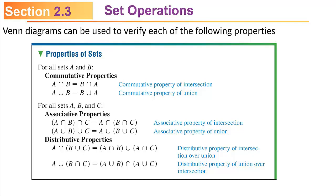Just like properties in algebra with commutativity, associativity, and distributivity, we can do the same thing with sets. I just want to show you that those things exist; we don't have much use for them in what we're doing, but they're important for more advanced work with sets.